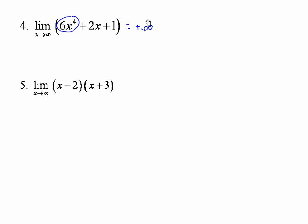Number 5 is an interesting problem because some of you might be tempted to FOIL these out — you could do that. But you can muscle your way through thinking: as x gets bigger and bigger, this factor is also increasing, and so is this factor. So the product of those two increasing numbers is also going to be increasing.